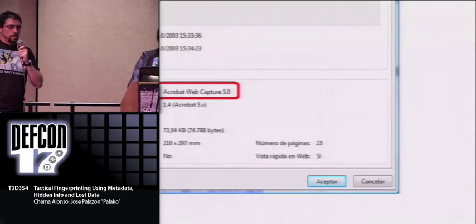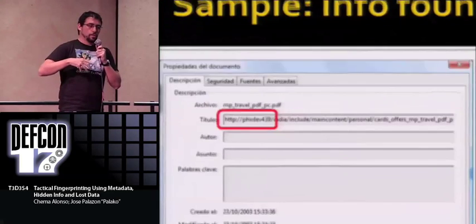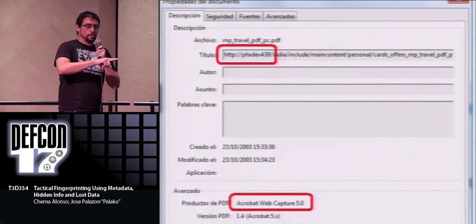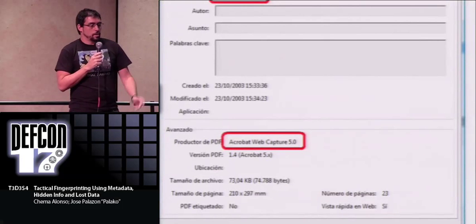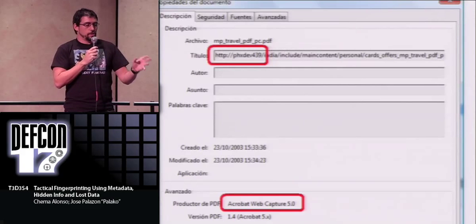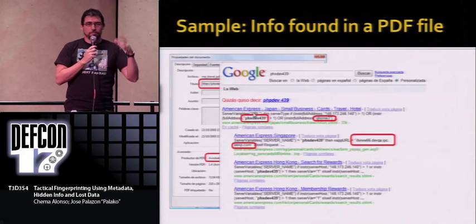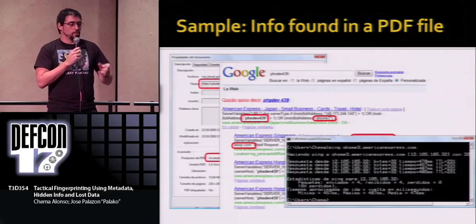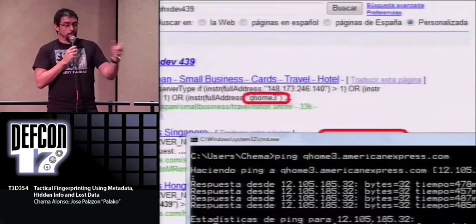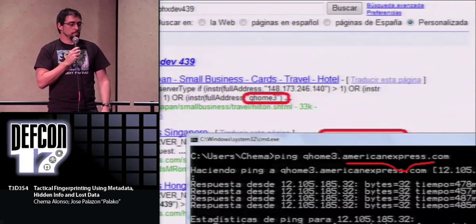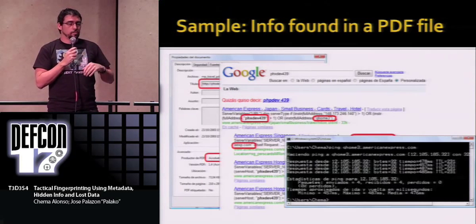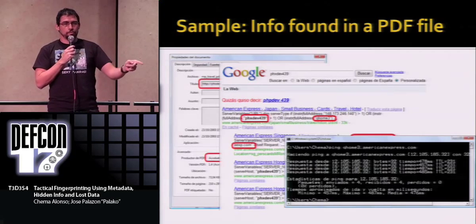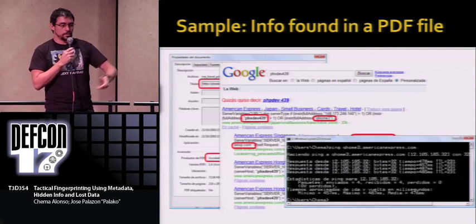Here's another example of starting with metadata: you download a file from the web, see in the metadata a URL with a server name and more PDF information. You take that piece of information, make another Google search, get some error messages, and discover another server name. You ping that server name — this was from an American Express example. You didn't know anything about the organization before, and they may not even be hosting their files in-house. But now you know information about the network and can actually access it.